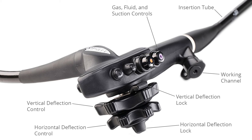Gas, fluid, and suction controls. Video controls allow the image to be adjusted. The external cord connects the endoscope to external light, gas, fluid, and suction sources, and to an external display.